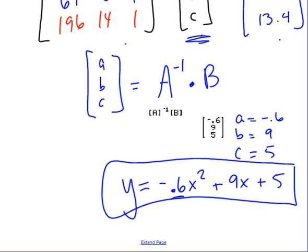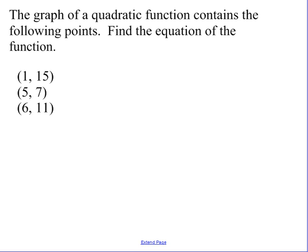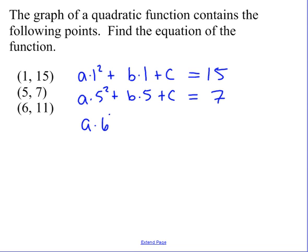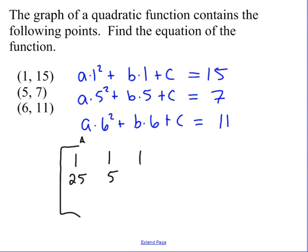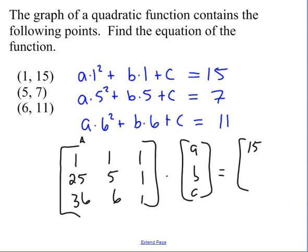We're going to do one more quadratic. If you know how to do it, go ahead and stop it. Do it on your own if you want to walk through the steps with me, follow along. So again, starting off with writing my equation, A times 1 squared plus B times 1 plus C equals 15. A times 5 squared plus B times 5 plus C equals 7. And A times 6 squared plus B times 6 plus C equals 11. So my matrix A is going to look like 1, 1, 1 across for the first equation, 25, 5, 1, 36, 6, 1. My variable matrix is ABC, and my matrix B is 15, 7, and 11.